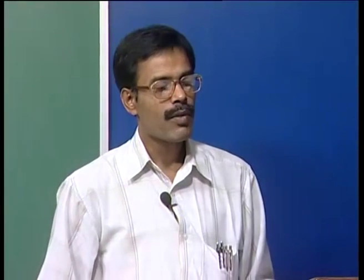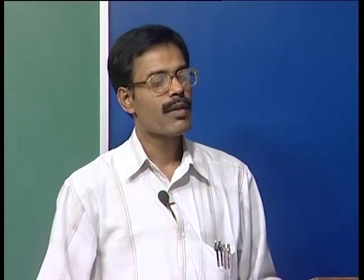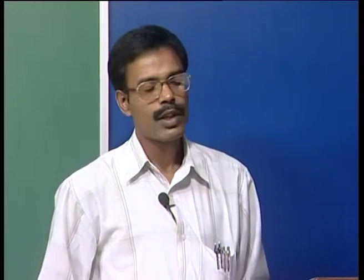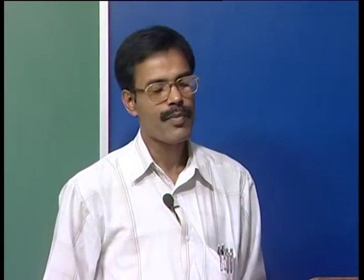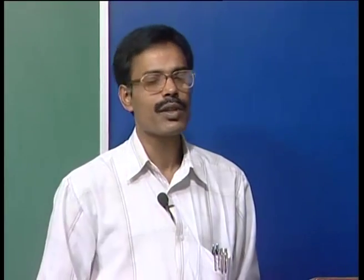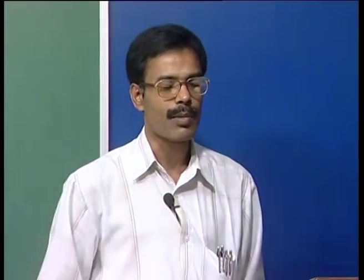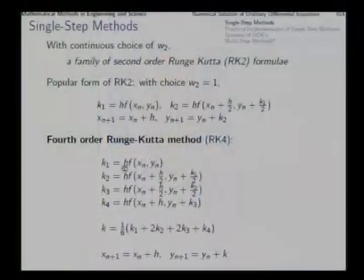You can work out higher-order methods also in the Runge-Kutta family. But for getting a fifth-order Runge-Kutta method, it is not enough to make five function evaluations. However, with six function evaluations you can work out a fifth-order method. That particular arrangement has some further merit which we will be discussing a little ahead.